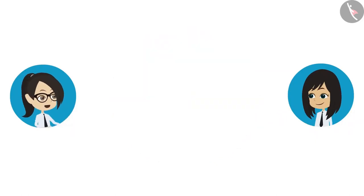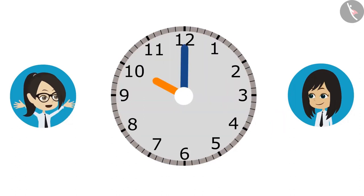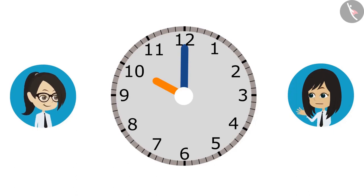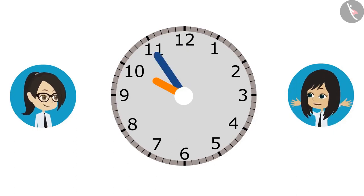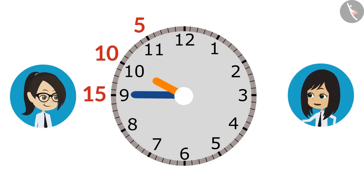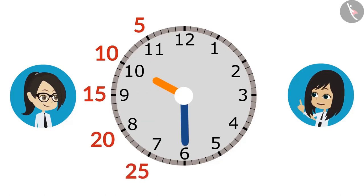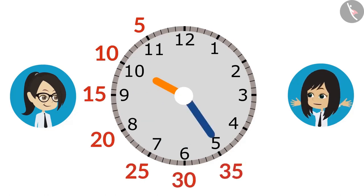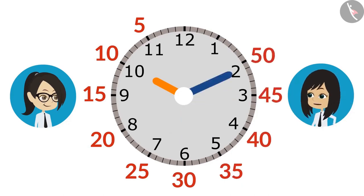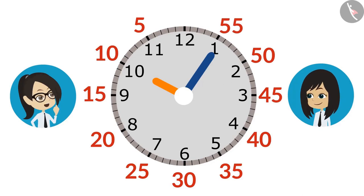Now look carefully. Let's draw 10 o'clock in the clock and then rewind the minute hand 55 minutes behind. 5 minutes when moved from 12 to 11, 10 minutes from 11 to 10, 15 minutes at 9, 20 at 8, 25 at 7, 30 at 6, 35 at 5, 40 at 4, 45 at 3, 50 at 2, and 55 minutes at 1. This means the minute hand will be at 1 when it is 55 minutes before 10 o'clock.